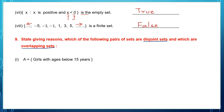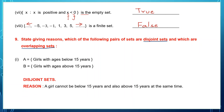Question 1: Set A contains girls with ages below 15, and Set B contains girls with ages above 15. Girls with ages below 15 and above 15 are completely two different groups — a girl cannot be both below 15 and above 15 at the same time. So there is nothing in common, and these two sets are disjoint sets.